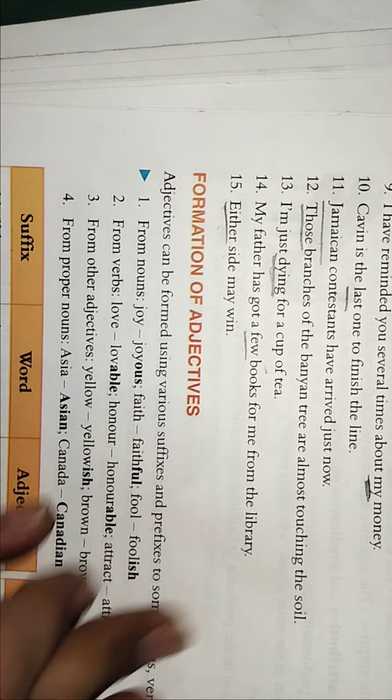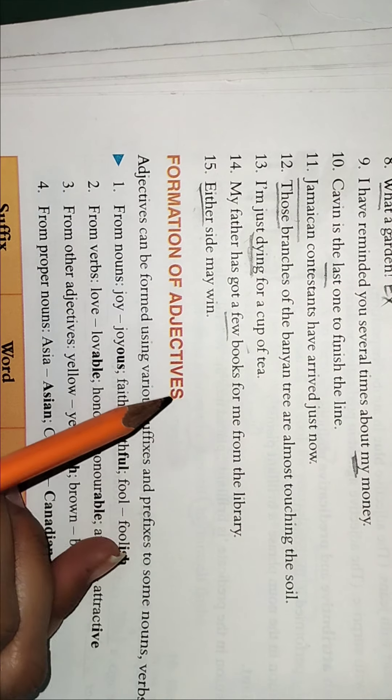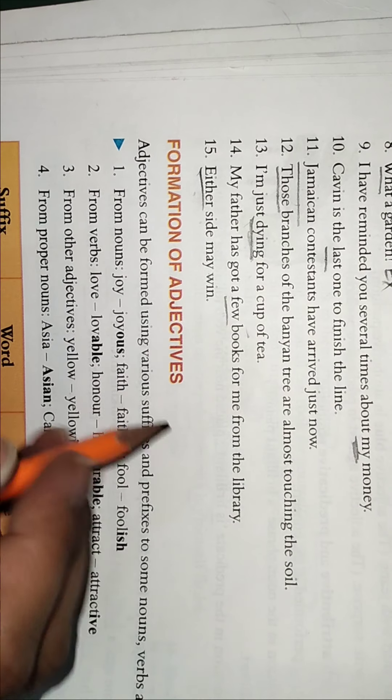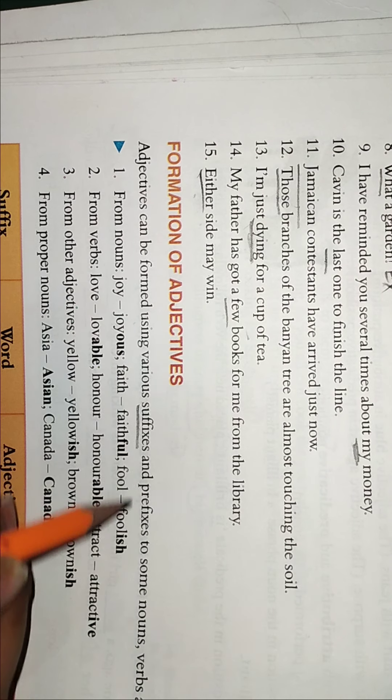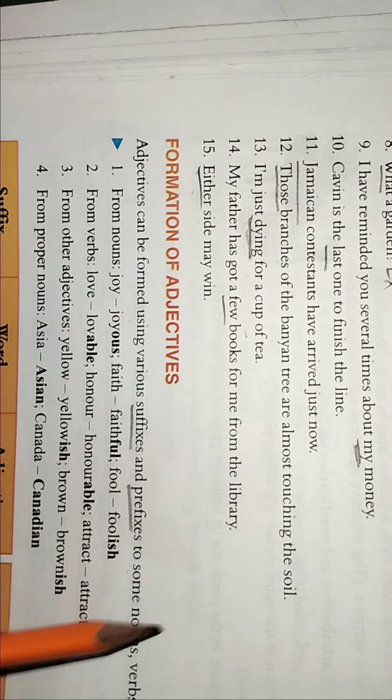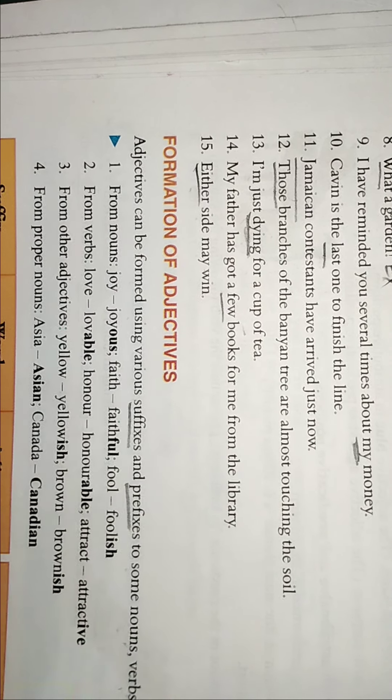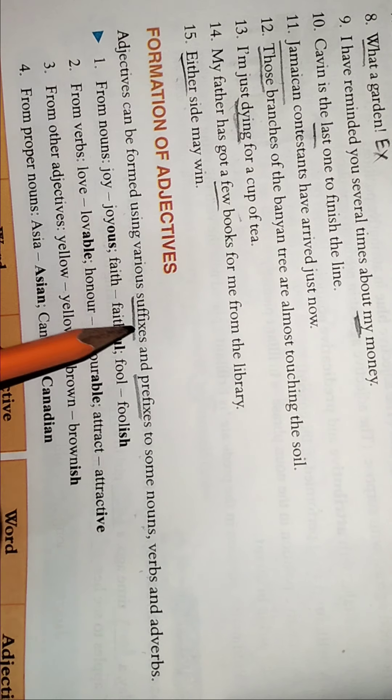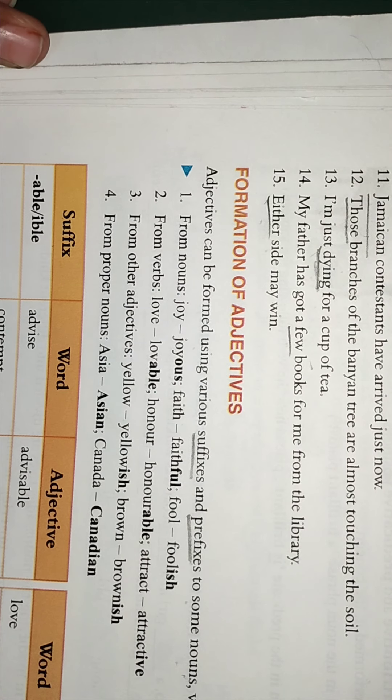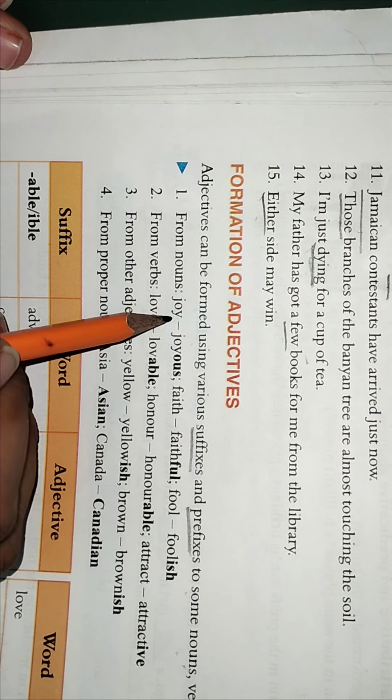Now we move to the formation, how the adjectives are formed. So adjectives can be formed in various ways by using various suffixes or prefixes to some nouns, verbs and adverbs. Kuch bhi koi noun hai, verb hai ya adverb hai, us mein agar hum ya to suffix laga dein ya prefix laga dein to adjective ban jata hai.